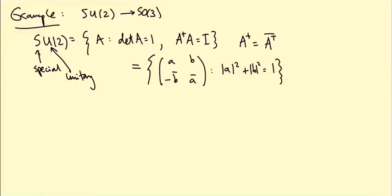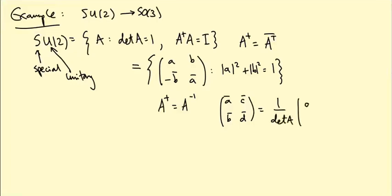Let me quickly explain why. The condition A†A = I tells us A† = A⁻¹. Writing A = [a, b; c, d], we get A† = [ā, c̄; b̄, d̄], and A⁻¹ = (1/det A)[d, −b; −c, a]. Since det A = 1, comparing entries gives ā = d, c̄ = −b, which is where the matrix form comes from.